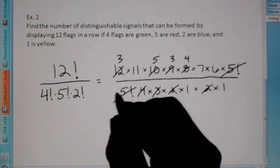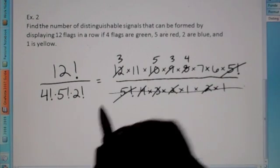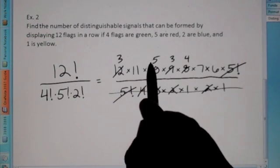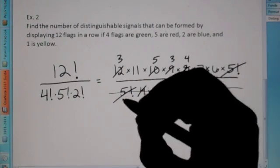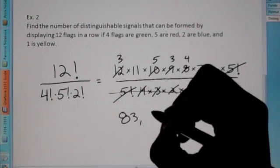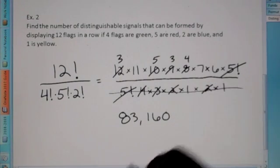That way, we just eliminate our entire denominator. So now, when you multiply 3 × 11 × 5 × 3 × 4 × 7 × 6, we end up with eighty-three thousand one hundred and sixty.